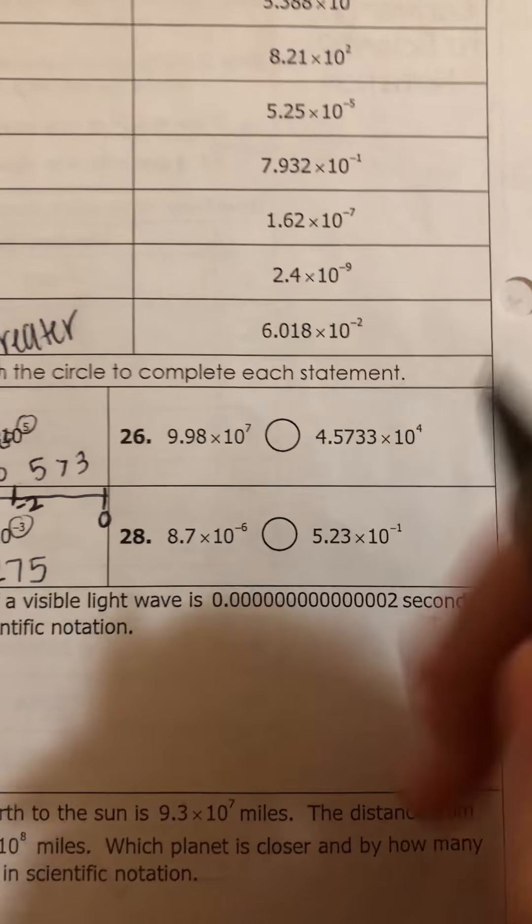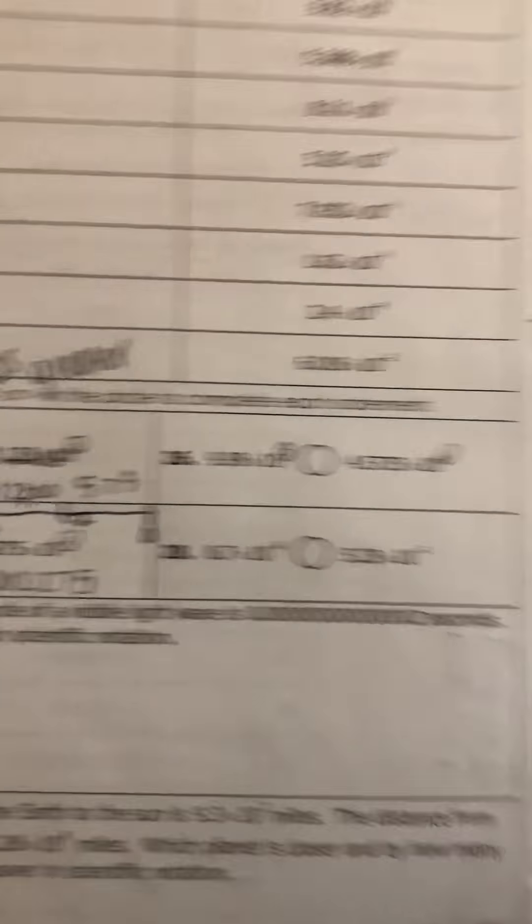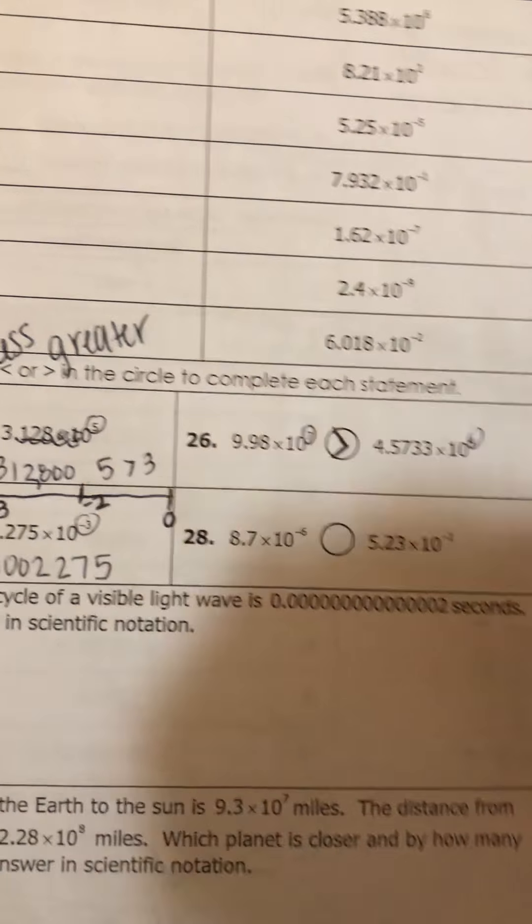Alrighty. So now we're going to check. This one, we both had positive exponents, so we just had to compare exponents. And 7 is greater than 4, so this one should be greater than.